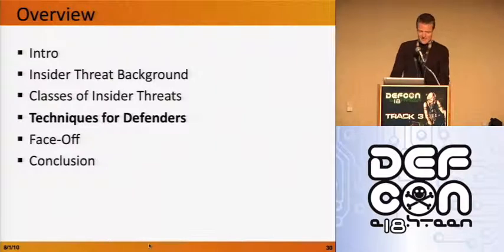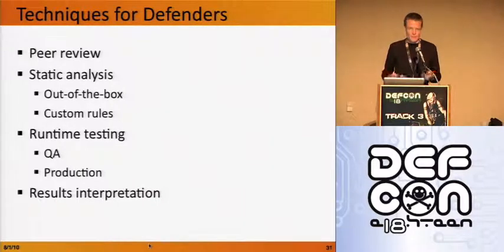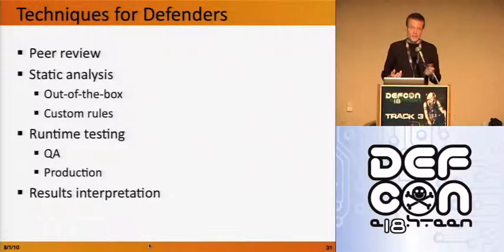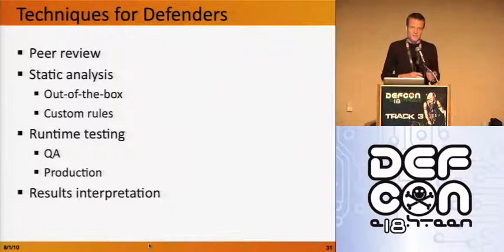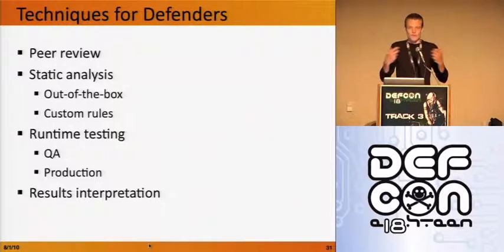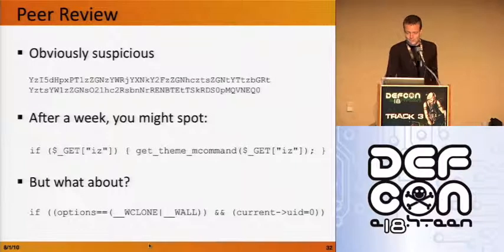Jacob: I'm going to talk about a couple of detection techniques. First and foremost, perhaps most popular, is peer review — manual code review where you read through code someone else in your organization wrote. Static analysis is a great way to expand on and expedite the code review process for security vulnerabilities. We'll talk about how static analysis can apply to finding insider threats, cover runtime techniques, and discuss how to interpret results. It takes a different mindset when looking for an insider versus an accidentally introduced vulnerability.